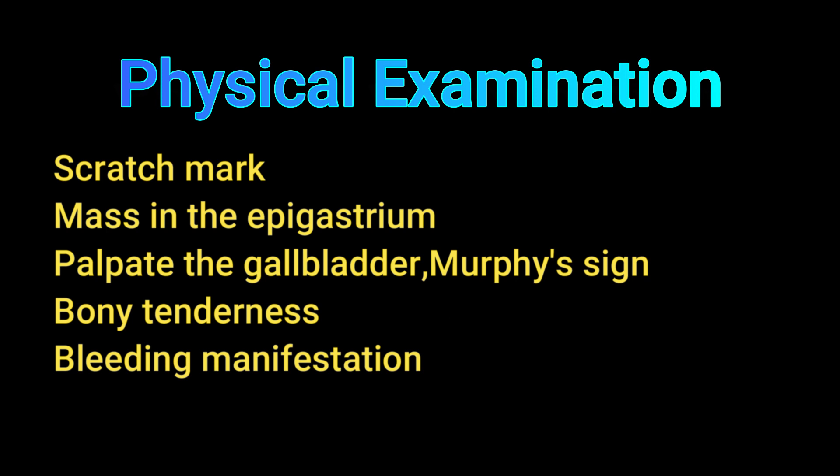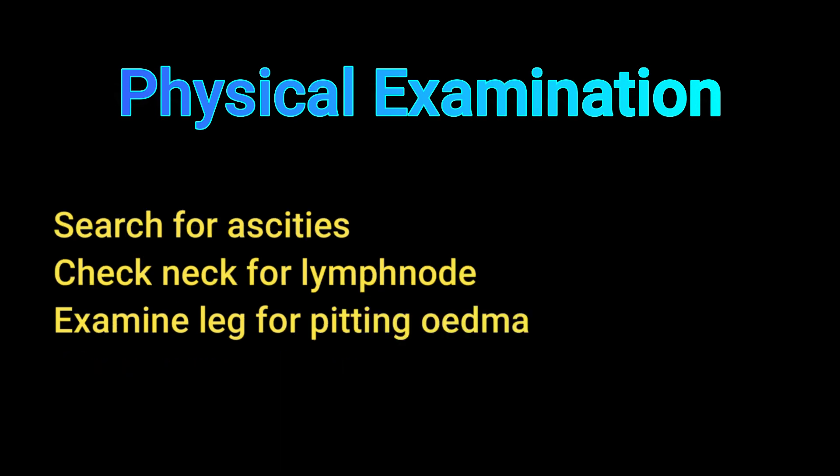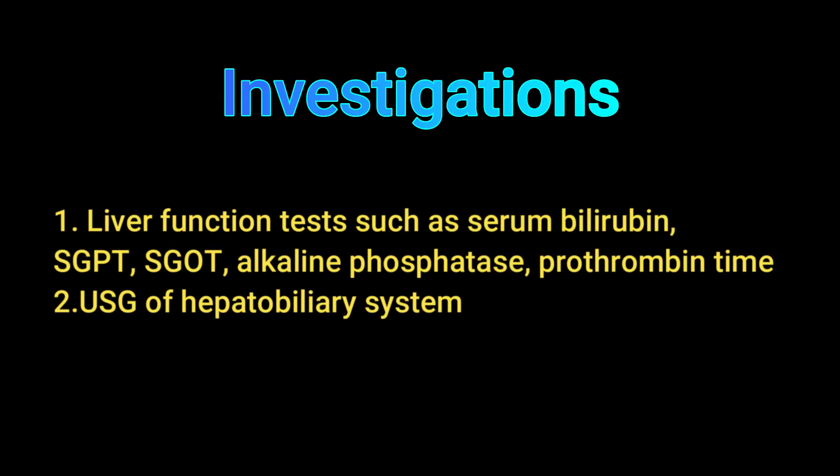Search for scratch marks, which may be present in obstructive jaundice. Check for a mass in the epigastrium, palpate the gallbladder, check Murphy's sign, and assess for bony tenderness and bleeding manifestations. Also check for ascites, examine the neck for lymph nodes, and check the legs for pitting edema, which may be present in congestive cardiac failure where tender hepatomegaly with jaundice can occur.